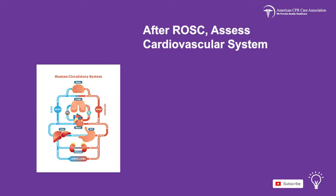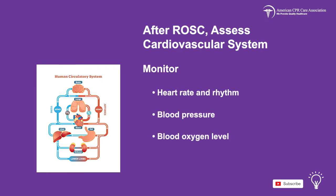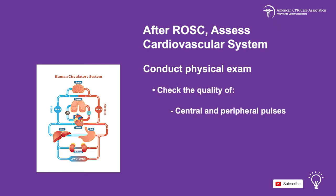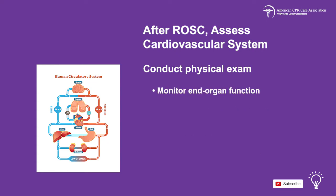After the return of spontaneous circulation in the child, first assess the cardiovascular system. Monitor the child's heart rate and rhythm, their blood pressure, blood oxygen level, and urine output. Conduct a physical examination checking the quality of central and peripheral pulses, heart rate, as well as the child's temperature and color. Monitor end organ function.